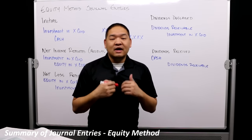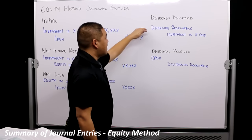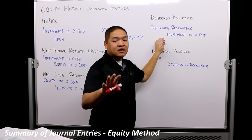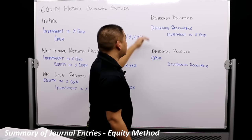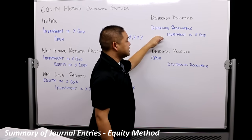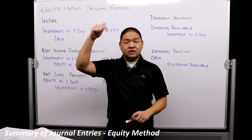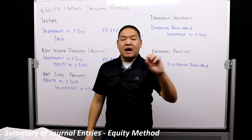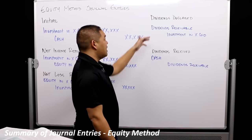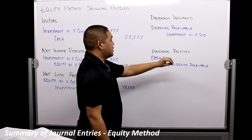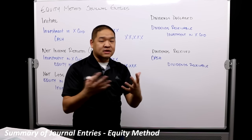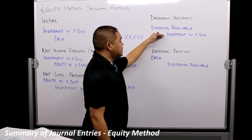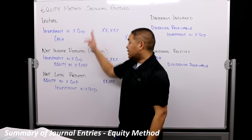When dividends are declared, we are going to debit Dividends Receivable and credit Investment in X Corp. When they are declared, debit Dividends Receivable, credit Investment in X Corp. Our investment account goes down because we're receiving money back — we technically have less equity in the organization. Our ownership percentage stays the same because dividends are typically distributed based on percentage of ownership, but we reduce the monetary value of Investment in X Corp.